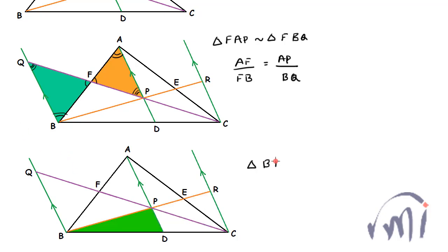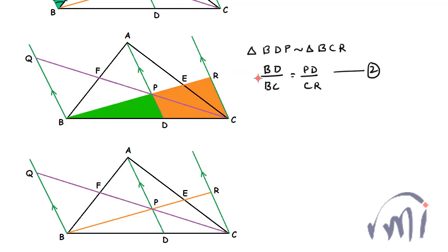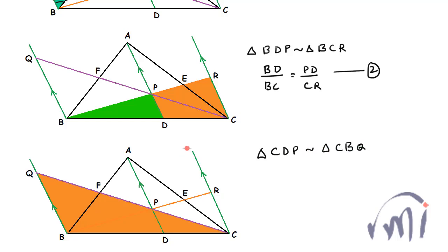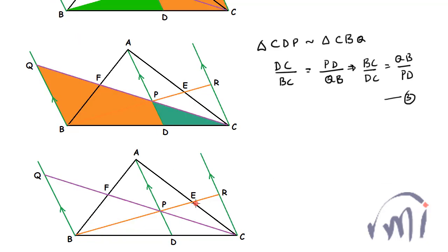Now I want ratios in terms of PD and DC. Triangle BDP is similar to triangle BCR, so the ratio BD to BC will be equal to PD to CR — call this equation 1. Comparing triangle CDB and triangle CBQ, the ratio DC to BC equals PD to QB, or equivalently BC divided by DC equals QB divided by PD — call this equation 3.